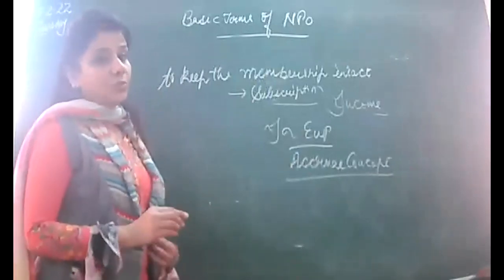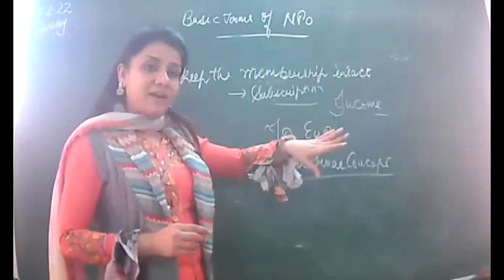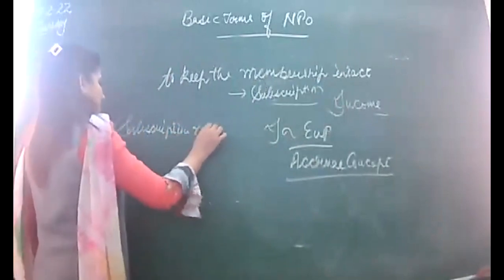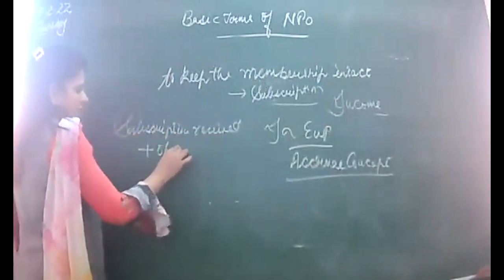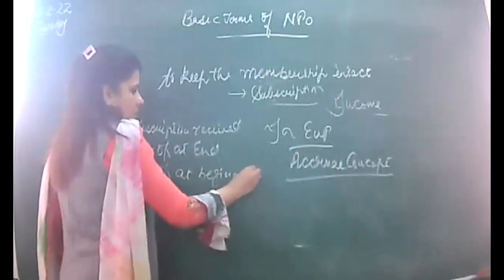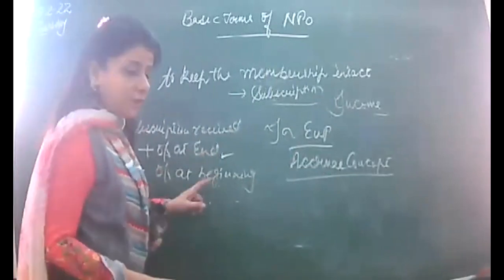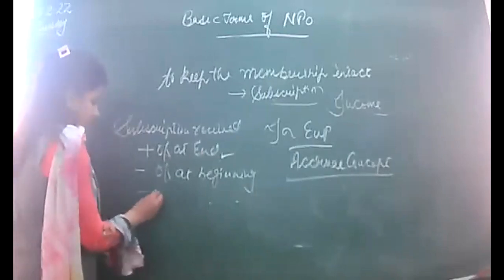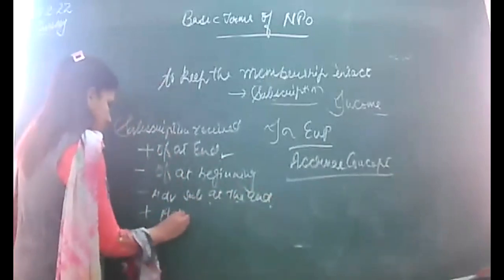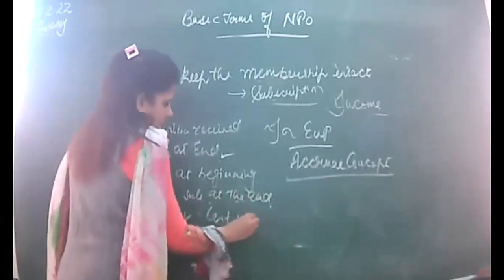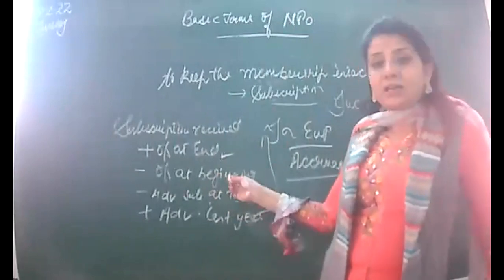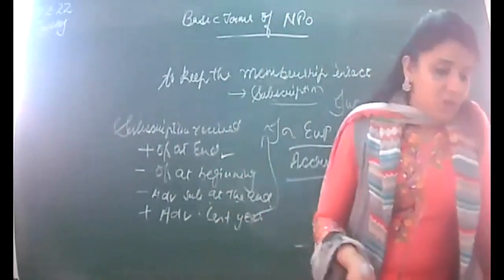Under the accrual concept, any income not yet received is to be added. The formula for subscription to be credited to the income and expenditure account: start with subscription received during the year, add outstanding at the end, deduct outstanding at the beginning, deduct advanced subscription at the end, and add advanced subscription of last year. Outstanding income of this year is added; outstanding income of last year is deducted. Advance of this year is deducted; advance of last year is added.